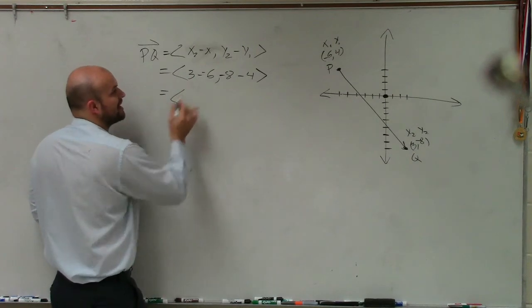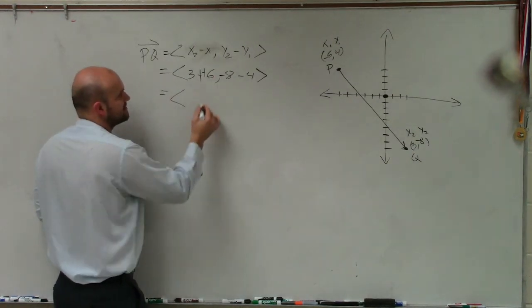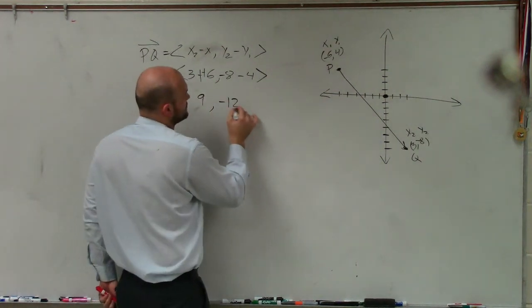So now let's go and subtract these. It's 3 minus a negative 6. That becomes a double positive. So that becomes 9. And then over here, I have negative 8 minus 4, which is a negative 12.